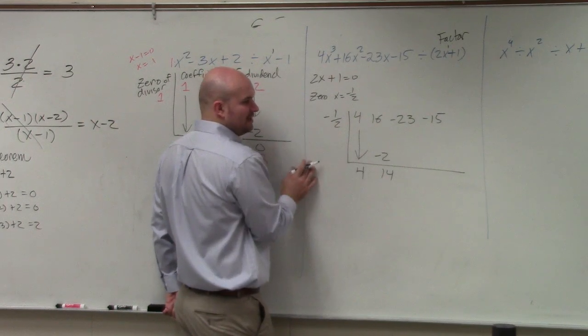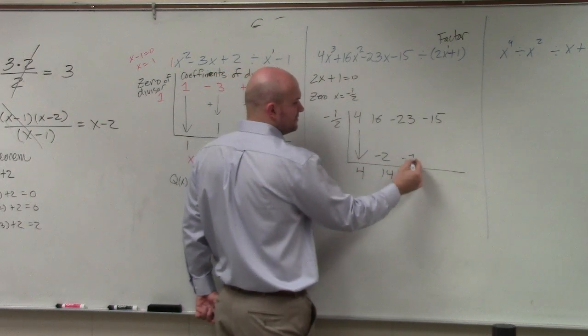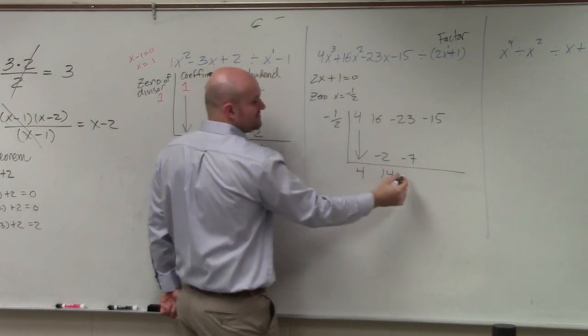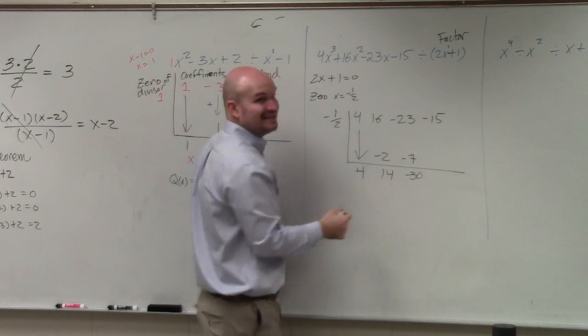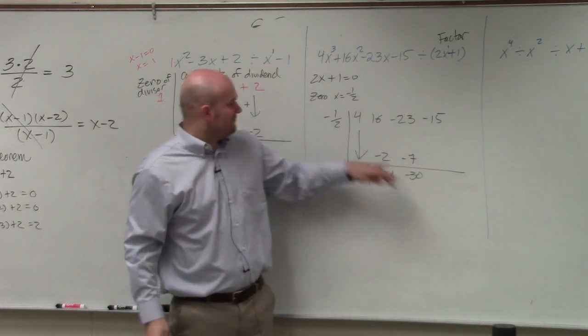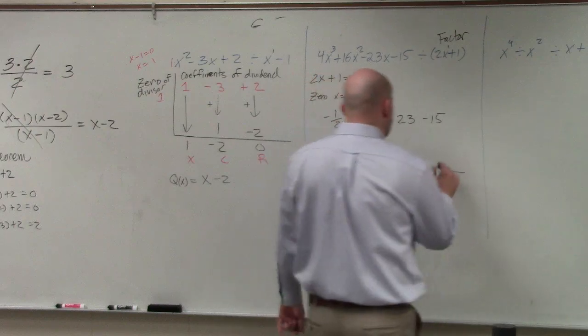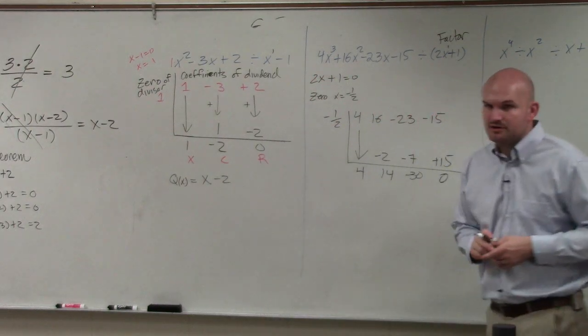14 times negative 1 half is going to be negative 7. Negative 23 plus negative 7 is negative 30. And negative 30 times negative 1 half is going to give you a positive 15, which gives you 0.